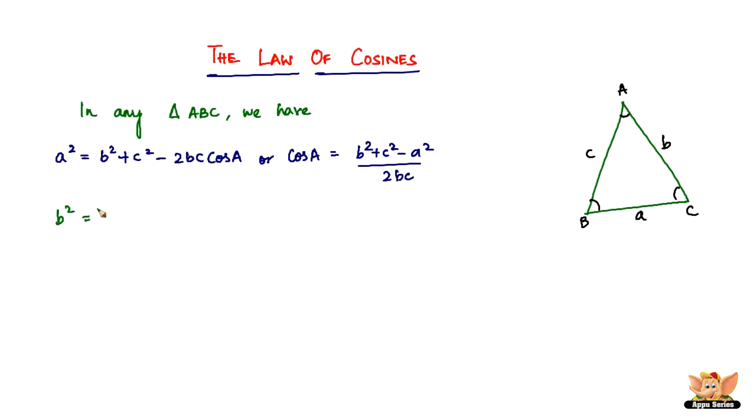So this is one of the laws, and the next one would be b². Now that a² is over, it's going to be b². b² is nothing but c² + a² - 2ac cos B. That is the angle. Or cos B can